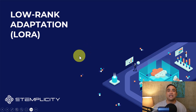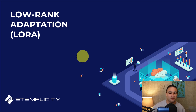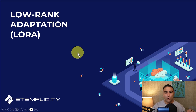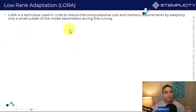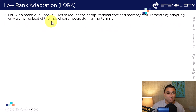If you remember in the previous lecture I covered how to do LLM fine-tuning, and the fine-tuning process was a computationally expensive process that requires extensive compute and also a lot of time. So LoRA is simply a technique used in large language models to reduce the computational cost and memory requirements by adapting only a small subset of the model parameters during fine-tuning.